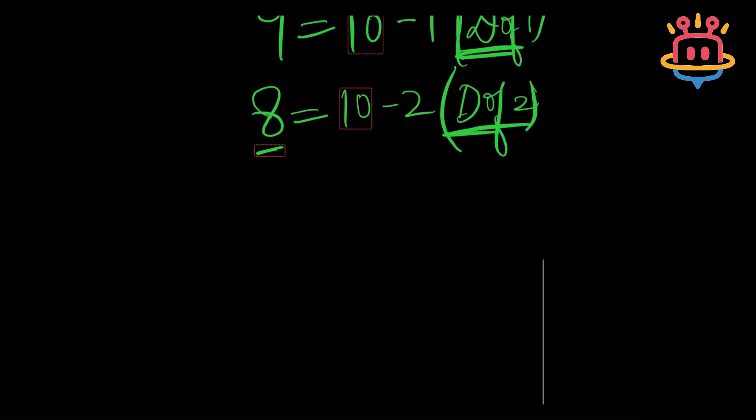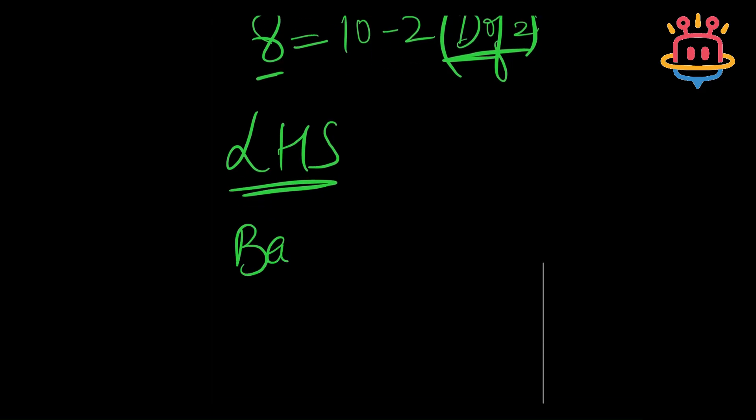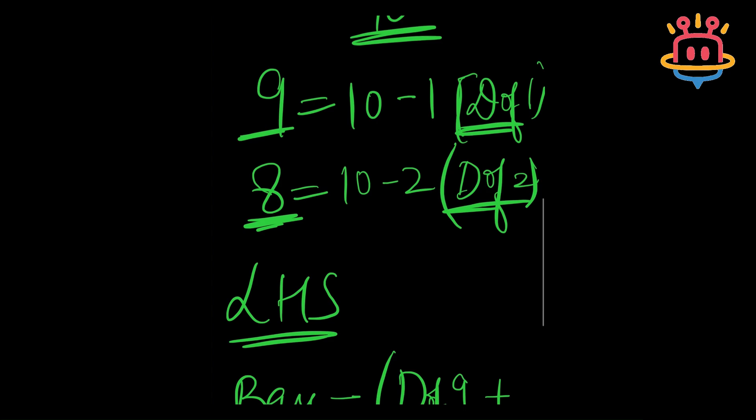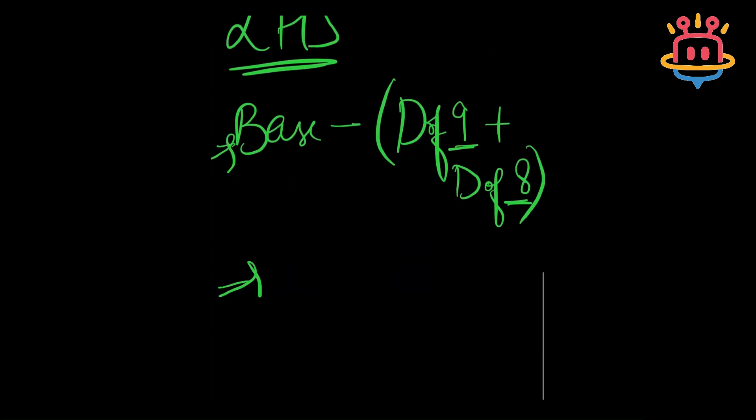Now, we will apply an LHS formula which says, base minus deficiency of 9 here plus deficiency of 8 here. 9 and 8 here are taken from our question.